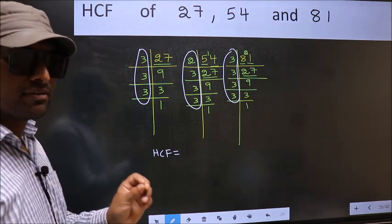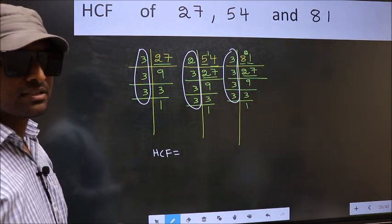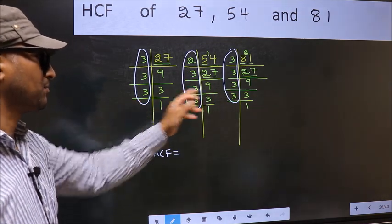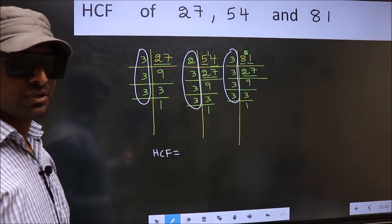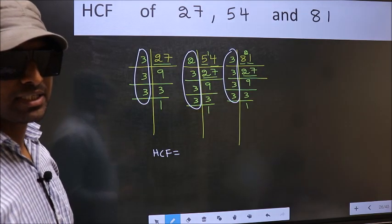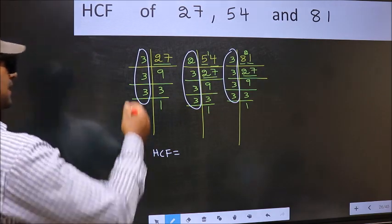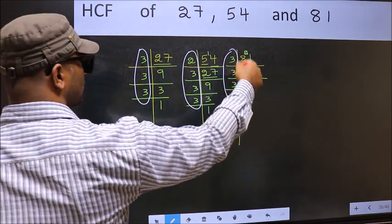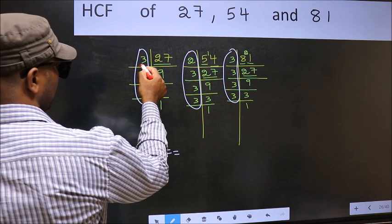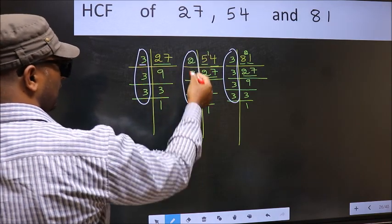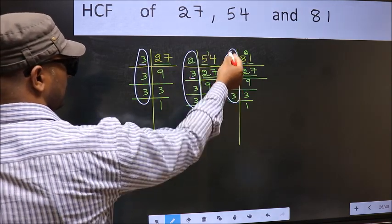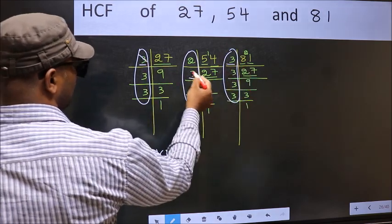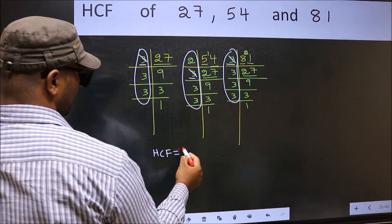HCF is the product of numbers which should be present in these three places. So now let us find the numbers which should be present here, here and also here. Starting with the number 3. Do we have 3 here? Yes. Go to the next place. Do we have 3 here? Yes.